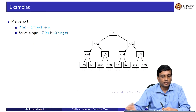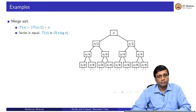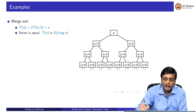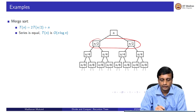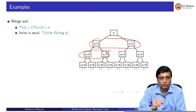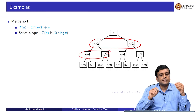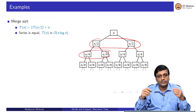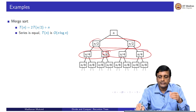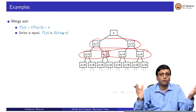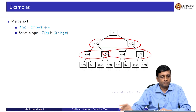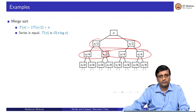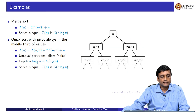For merge sort, the recursion tree shows that at each level the total cost adds up to n: n/2 + n/2 = n, n/4 + n/4 + n/4 + n/4 = n, and so on. This is the equal-series case, so we get n times the number of levels, giving O(n log n).